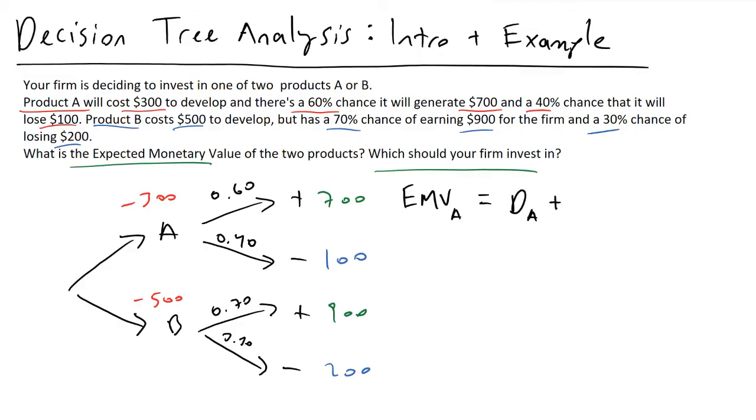Then we're going to have the probability of success, which I'll denote P_S, times the cost of success, C_S. And then we also have the probability of failure, which I'll write P_F, times the cost of that failure, which will be C_F.